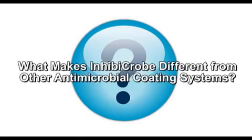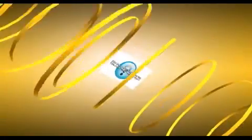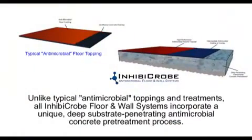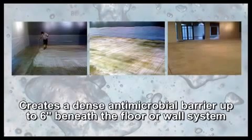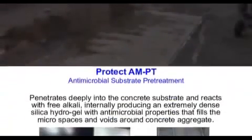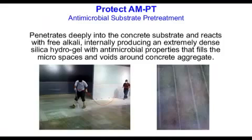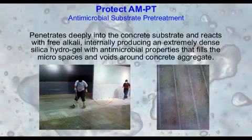But what makes Inhibicrobe different from other antimicrobial coating systems? Unlike typical antimicrobial toppings and treatments, all Inhibicrobe floor and wall systems incorporate a unique, deep substrate penetrating antimicrobial concrete pretreatment process. This process creates a dense antimicrobial barrier up to 6 inches beneath the floor or wall system. This spray-applied, deep substrate penetrating concrete pretreatment has been formulated to permeate into the voids and microspaces around concrete aggregate, where it then reacts with free alkaline, filling these spaces and creating an antimicrobial aqueous gel which permanently seals the concrete matrix.